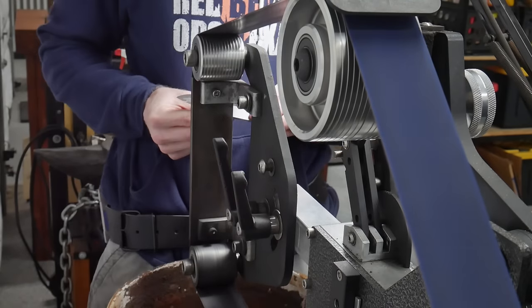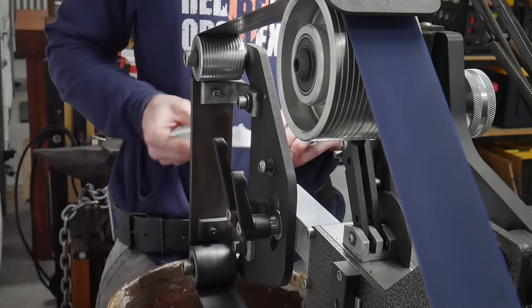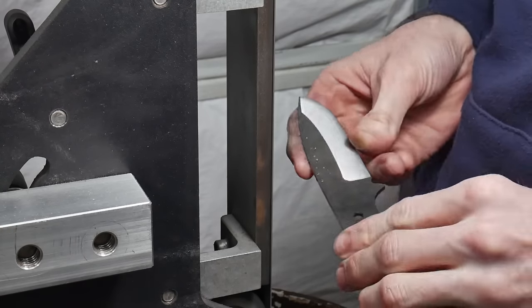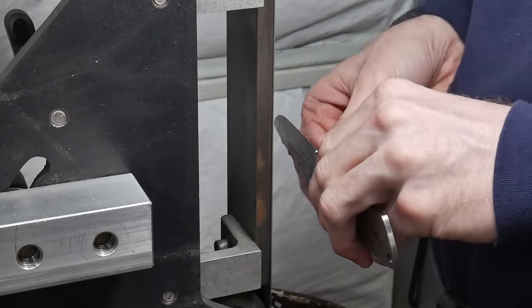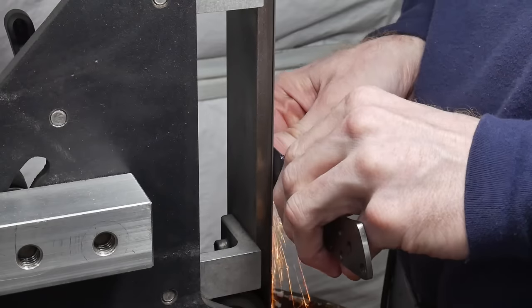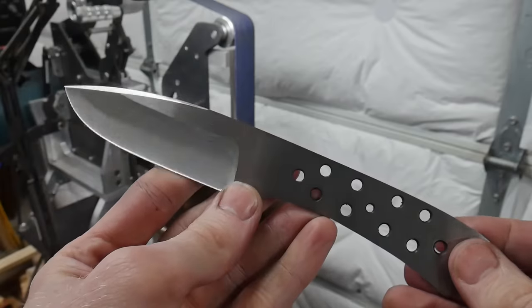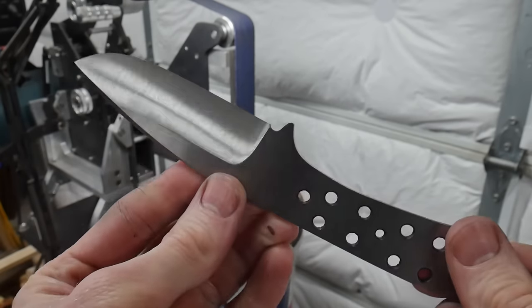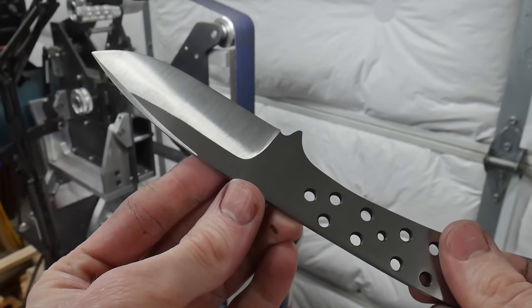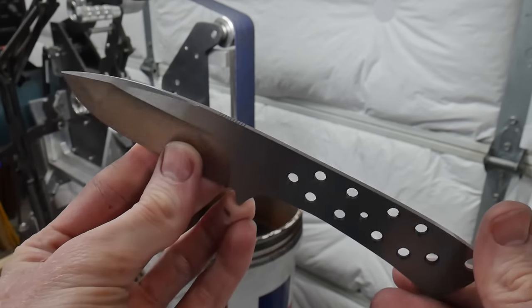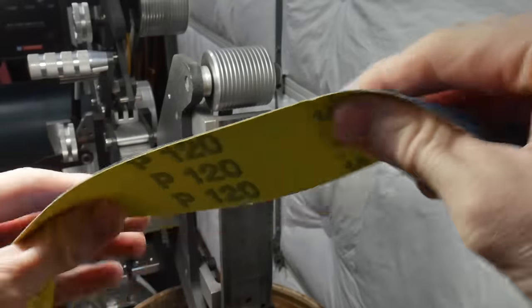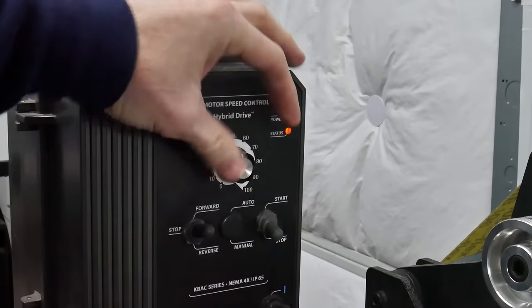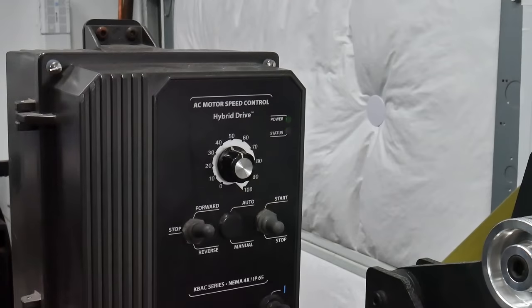One question I get a lot is why I like to grind post heat treatment, so I'll try to answer that here. First of all, the decision to grind either pre or post heat treatment is totally up to you—both work well and both have their own trade-offs. I personally like heat treating the blade while it has a uniform thickness and I feel like I get a more even heat in the forge. My clamping jig can mate to the flats easily to keep the blade straight.